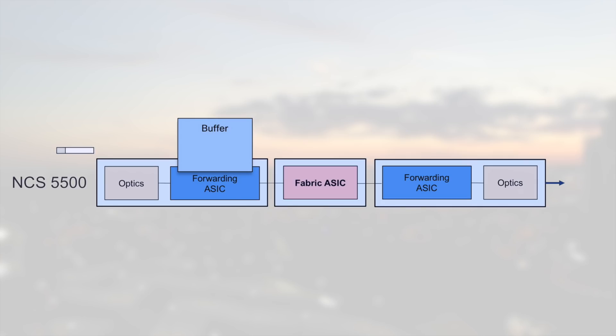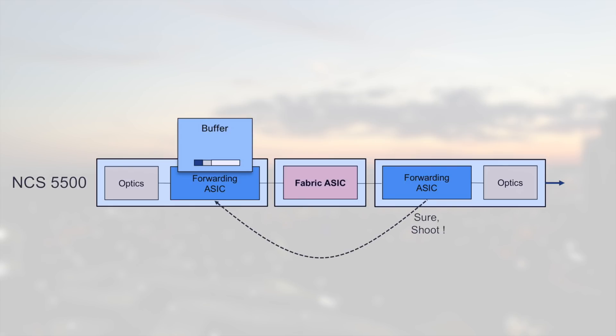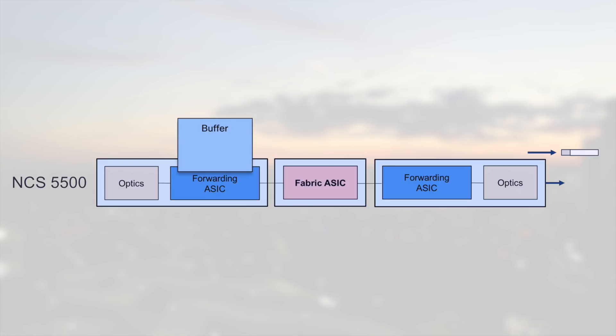The NCS5500 is using a VOQ-only model with ingress buffering. It will rely on constant communication between the ingress and egress pipelines of all the router NPUs. The packet is received and stored in the ingress buffer. Lookup is performed and the NPU identifies the destination. The ingress scheduler will then ask permission to transmit to the egress side, and it's only after receiving the grant that the packet is sent to the egress NPU and transmitted to the next-hop router.